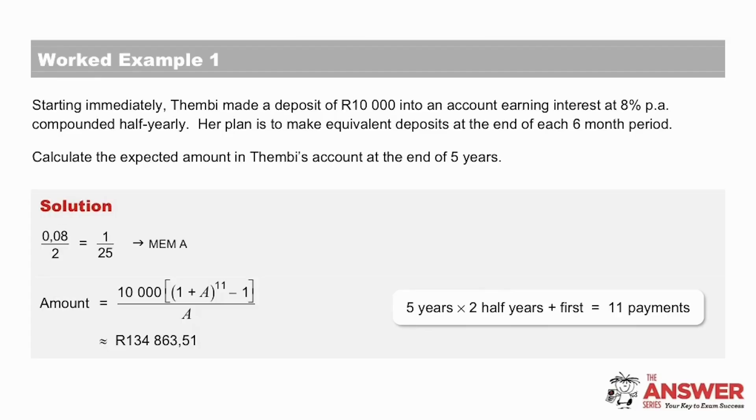So here is our 8% per annum compounded half yearly into the calculator memory. And then we use the future value annuity formula, but read carefully on the number of payments. Tembi made a payment immediately and then at the end of each six-month period until the end of five years. So 10 payments plus the immediate payment is 11 payments altogether. So the expected amount in Tembi's account at the end of five years is 134,863.51.